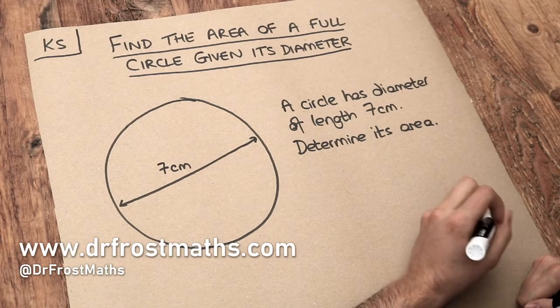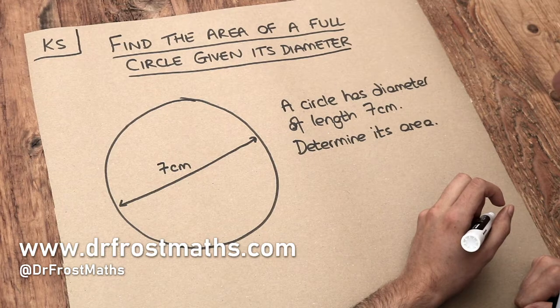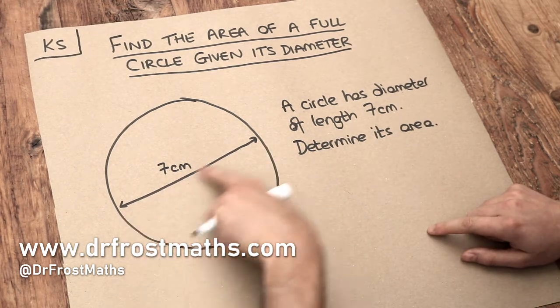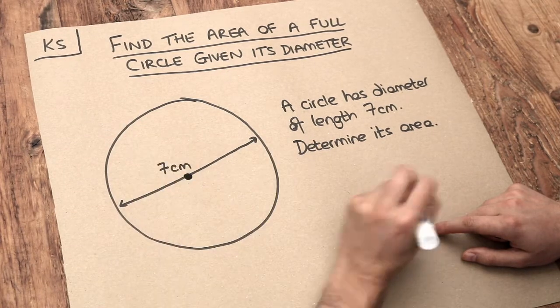Hello and welcome to this Dr. Frost Maths key skill video on finding the area of a full circle given its diameter. Now remember that a diameter is a line that goes across the circle from one end to the other that goes through the centre.